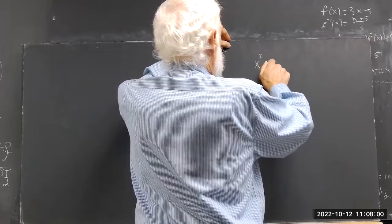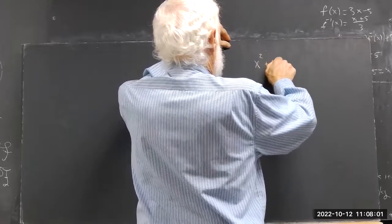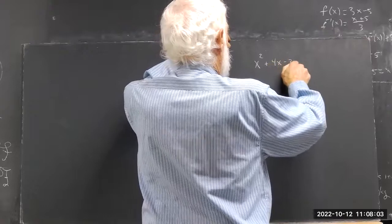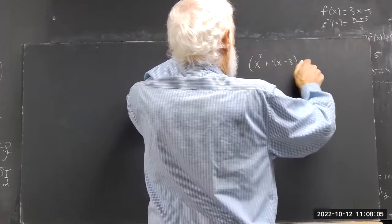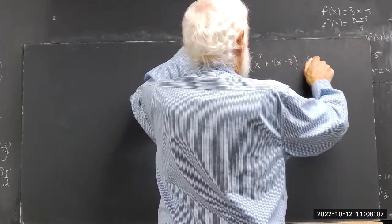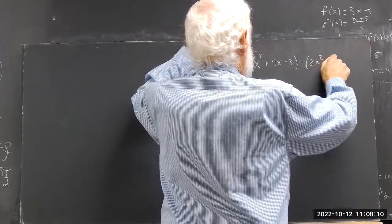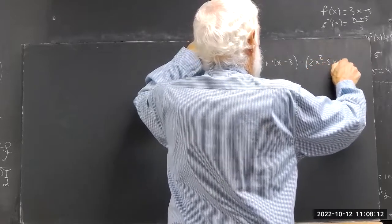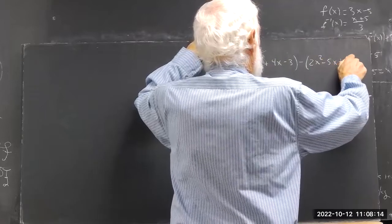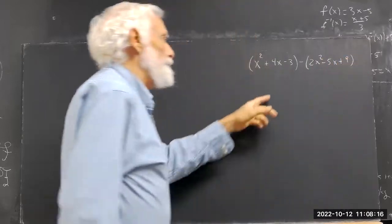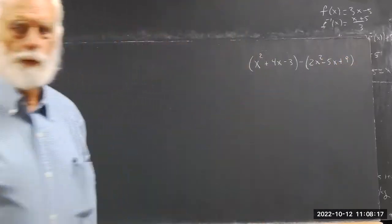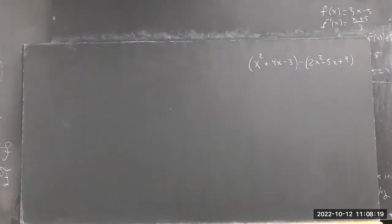So we have x squared plus 4x minus 3, minus 2x squared minus 5x plus 9x. See if you can simplify that. If not, it's fairly easy to explain, and we'll address it.